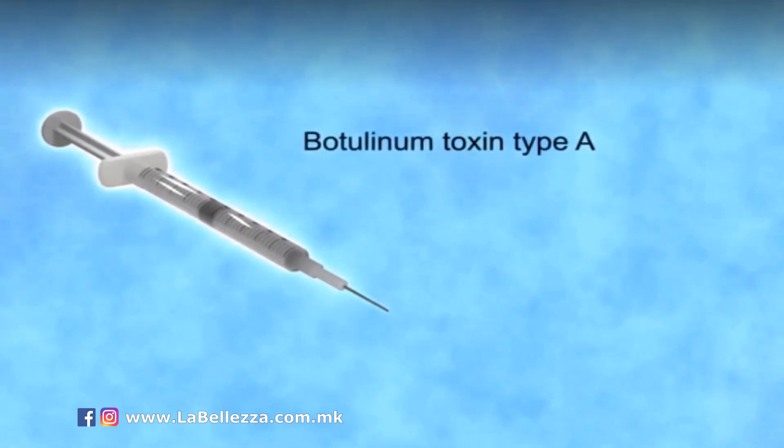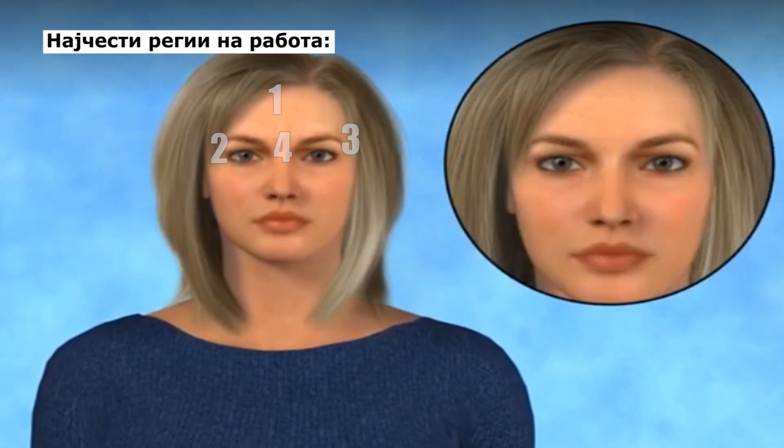Botulinum toxin type A injections are one of the most popular minimally invasive cosmetic procedures performed to treat facial lines and wrinkles, called frown lines, on the forehead.